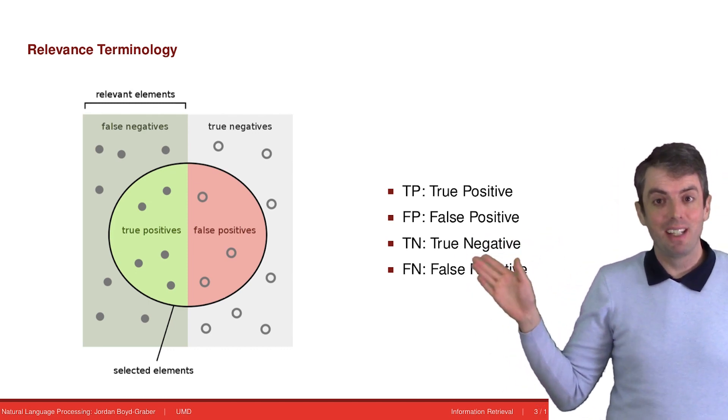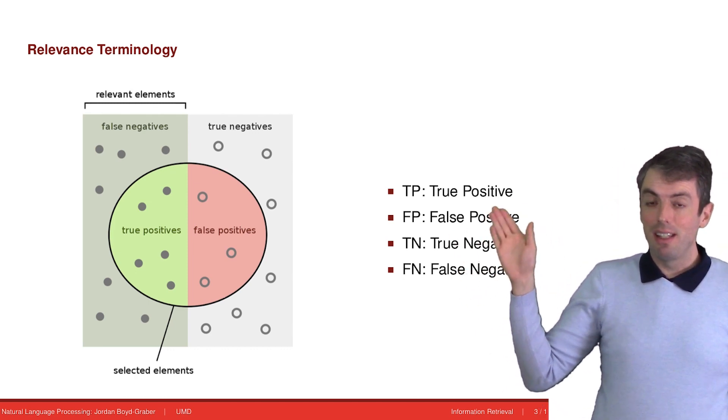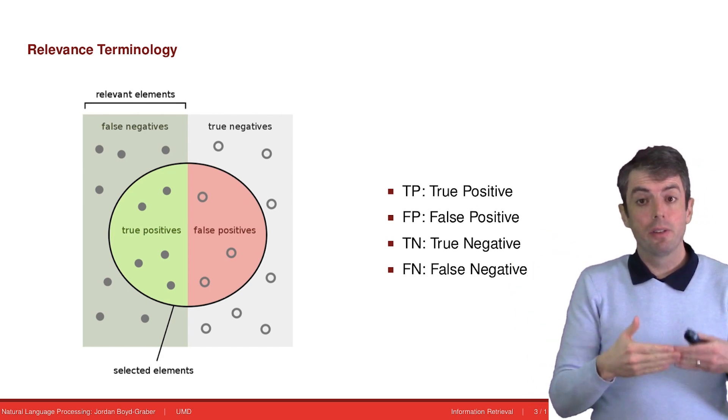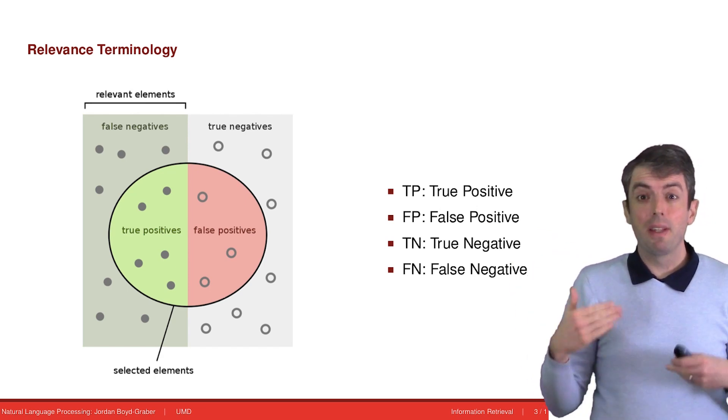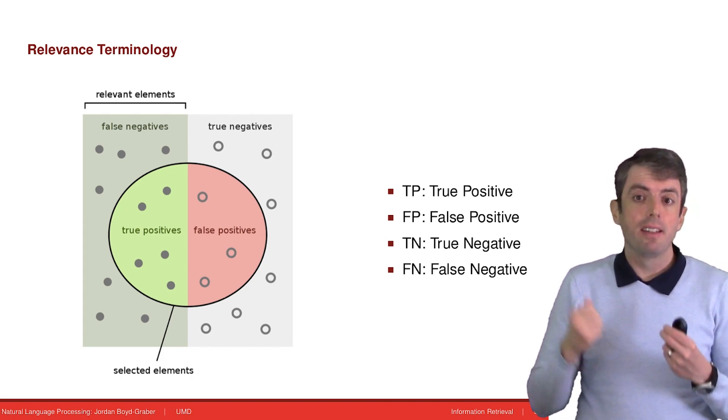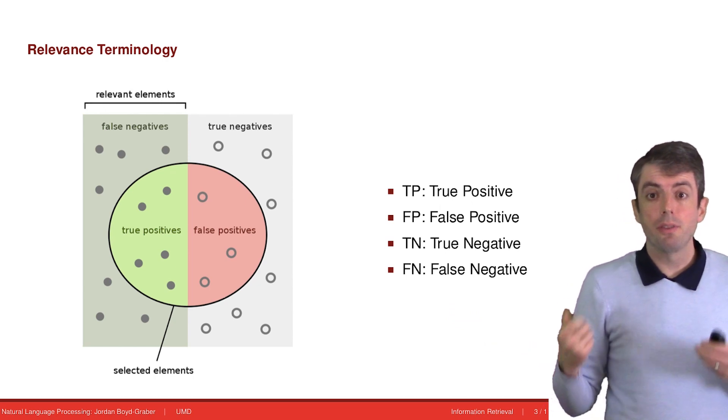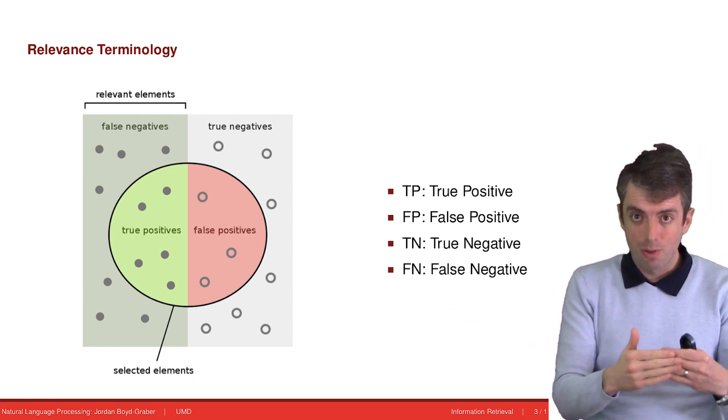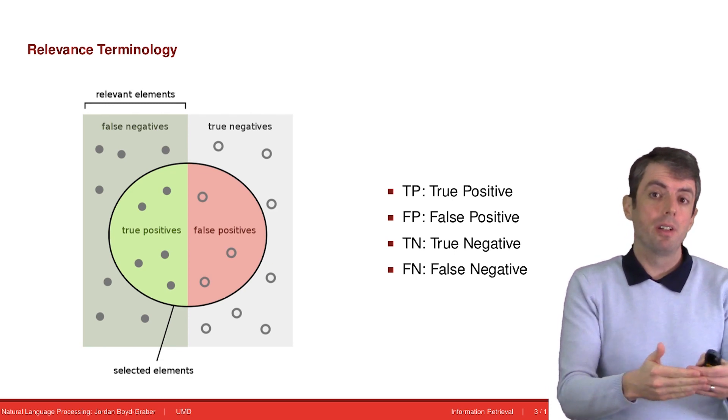Another kind of mistake that you can make is a false negative. These are documents that your system said weren't relevant, but they actually are. These are relevant things that should have been returned in the search results, but actually weren't. These are true documents that you should have returned, but you didn't.